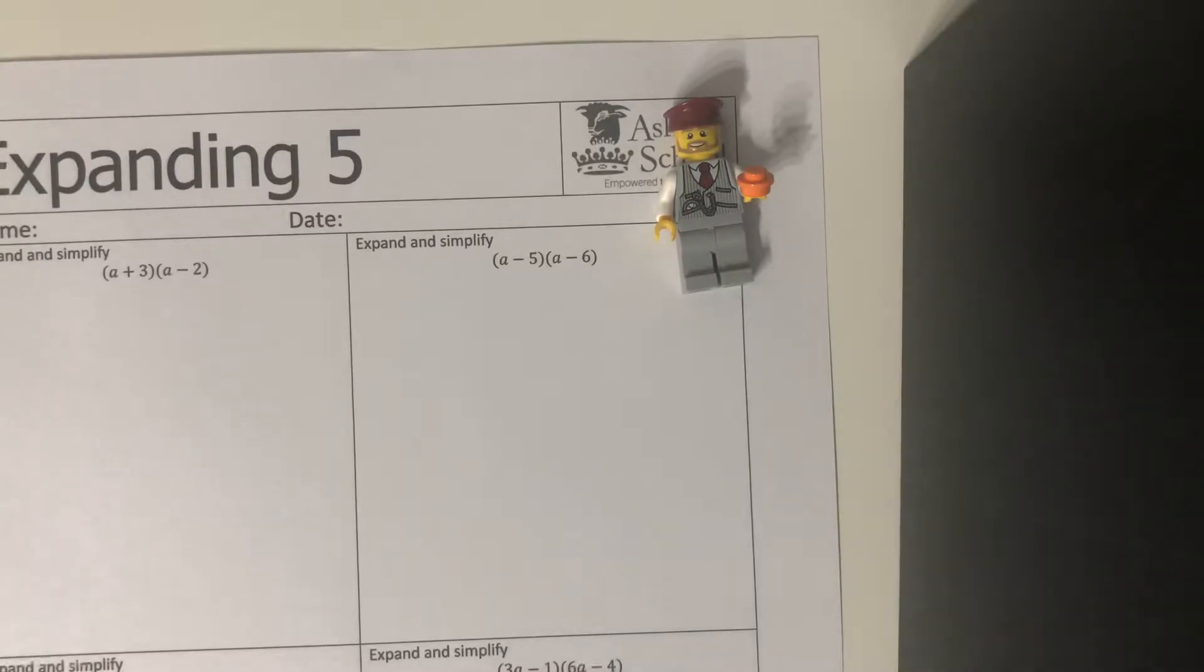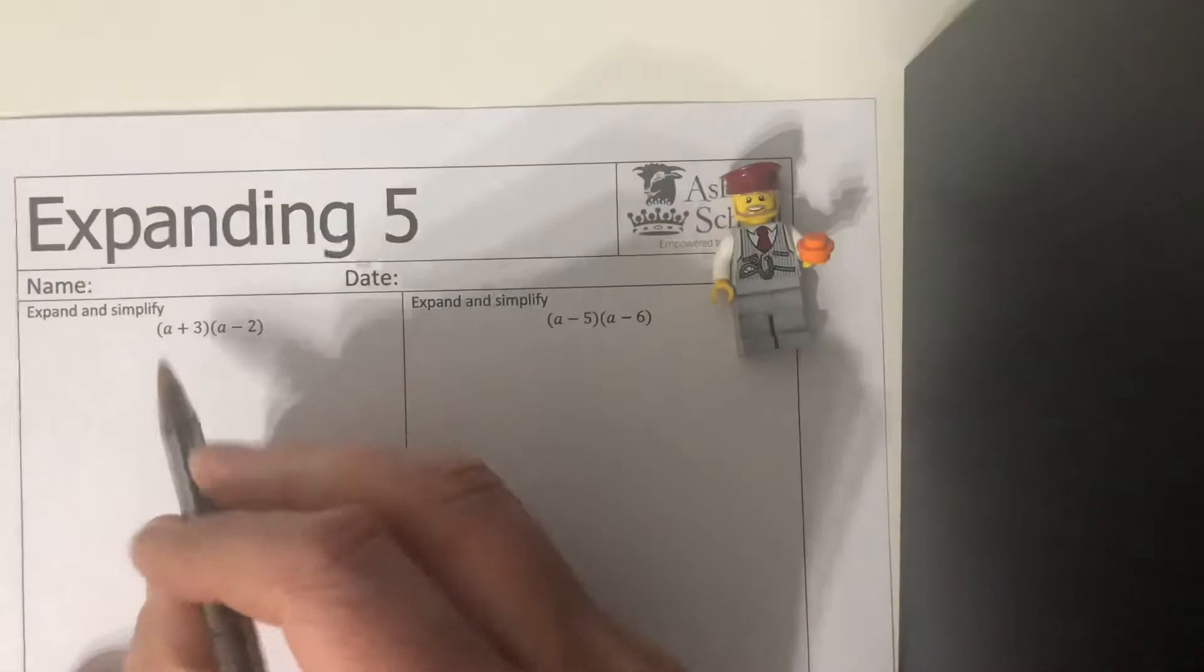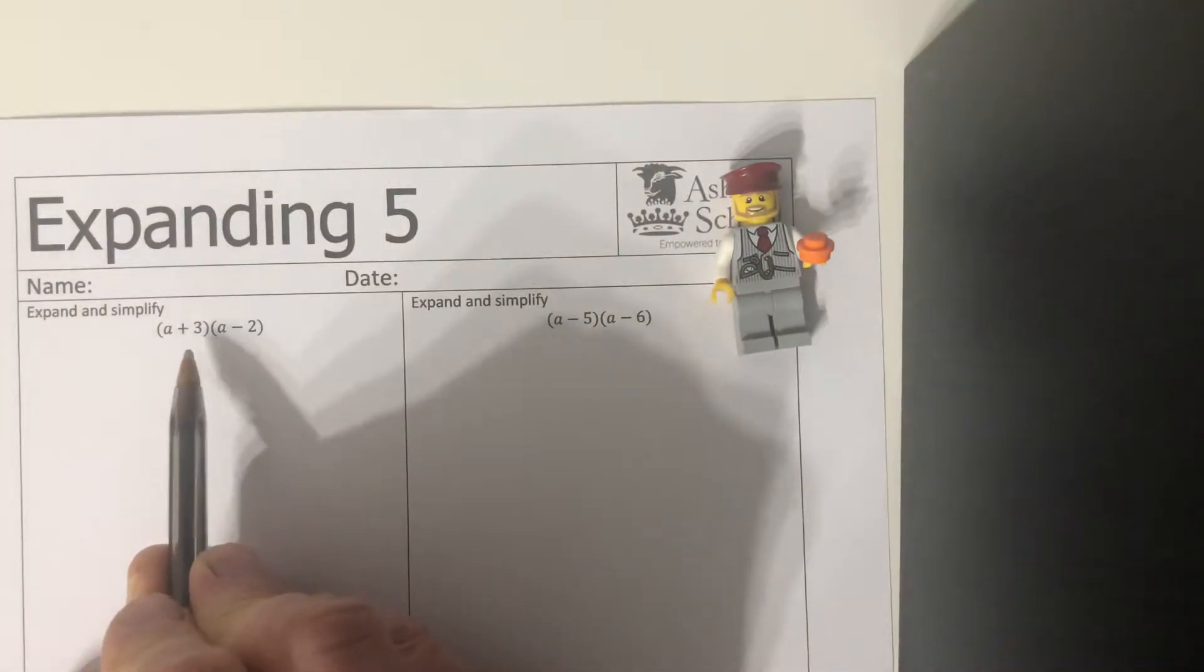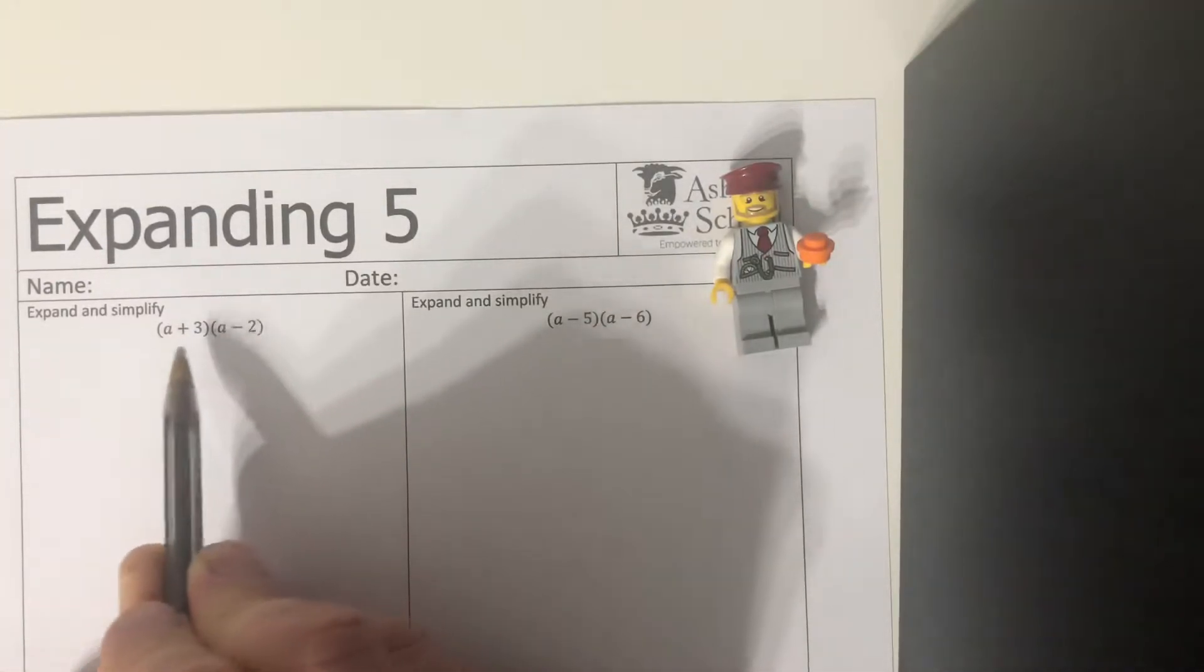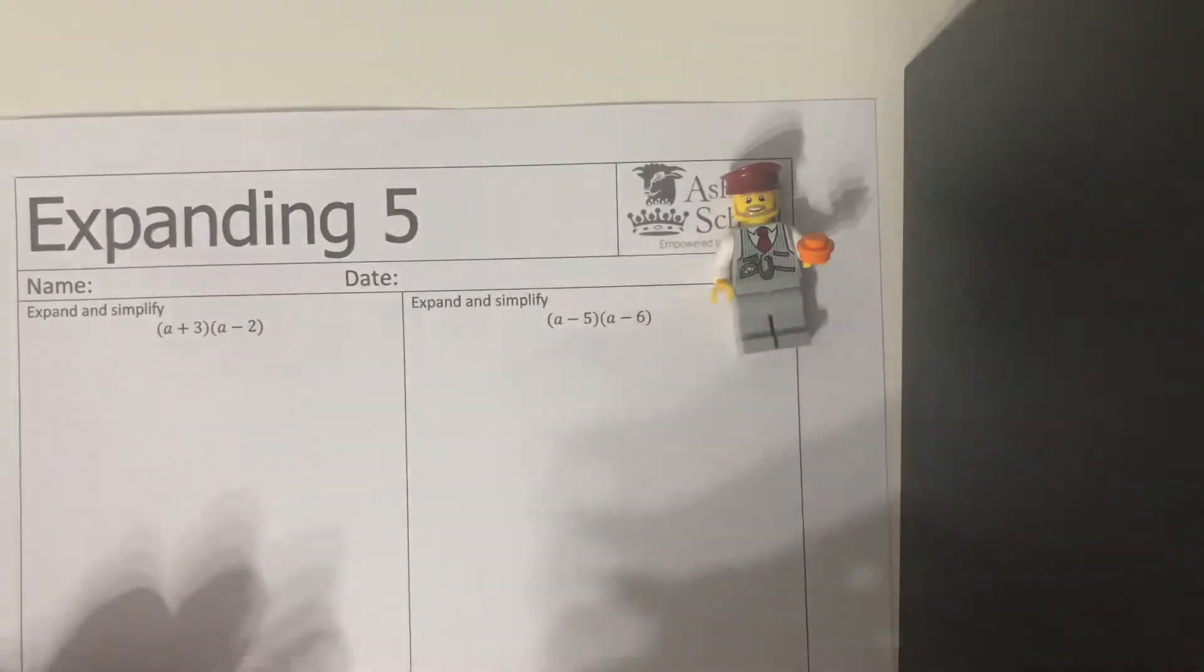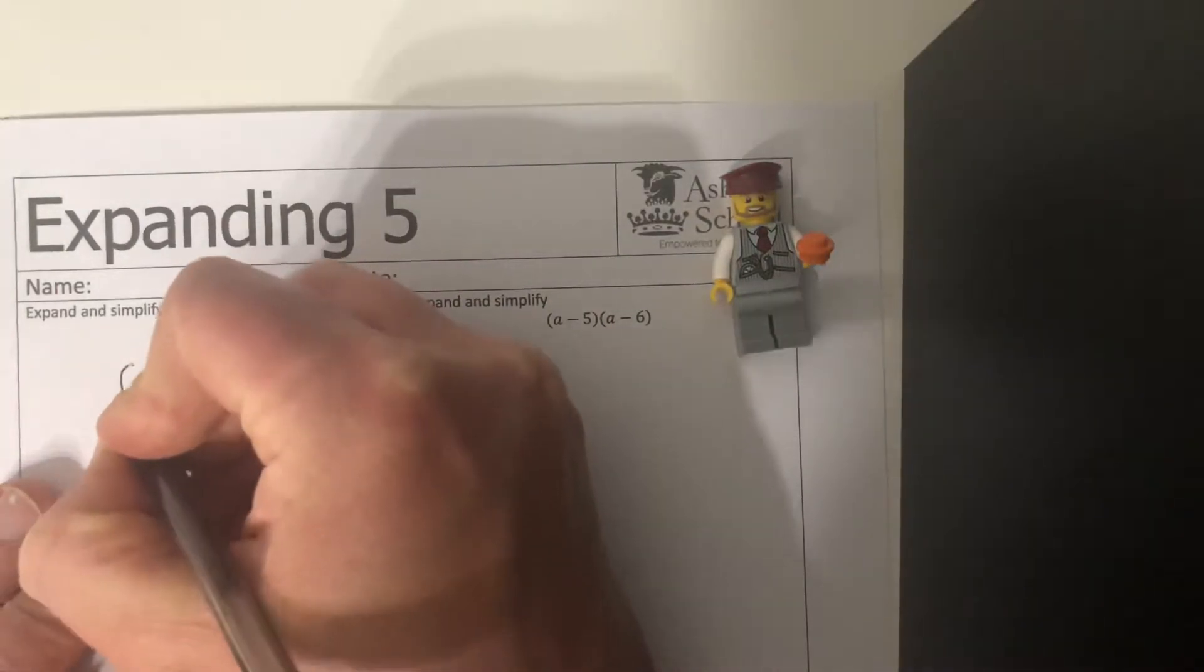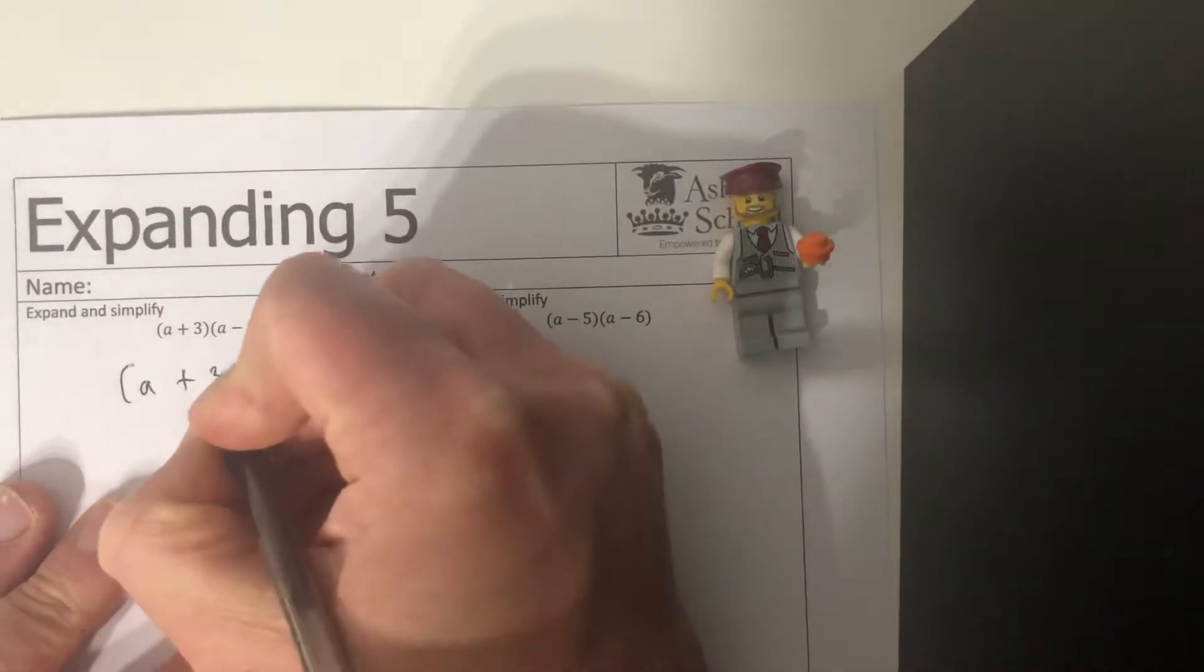Anyway, the idea about multiplying out brackets, we spoke last lesson about times everything in the first brackets by everything in the second brackets and tidying up and simplifying at the end. So particularly this one here we've got to multiply a plus three by a minus two. We don't know what a plus three is, we don't know what a minus two is, so therefore we can't literally simplify what's in the brackets already, so we'll have to multiply them as they stand.